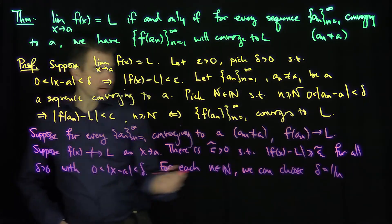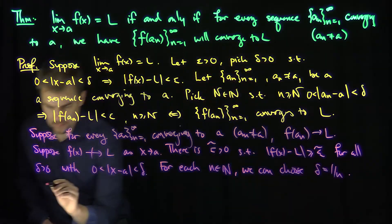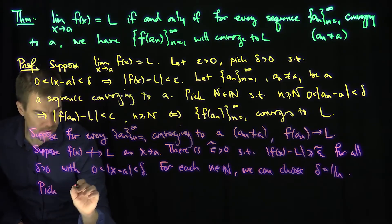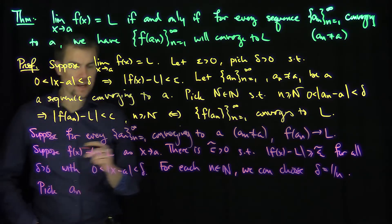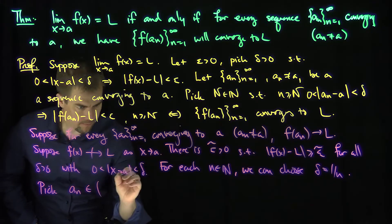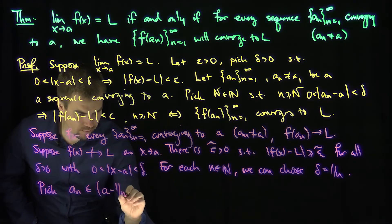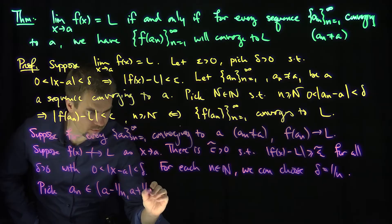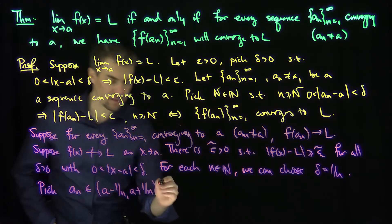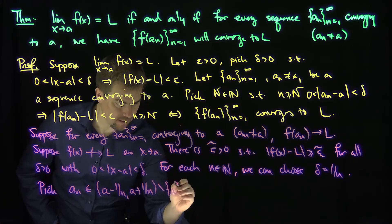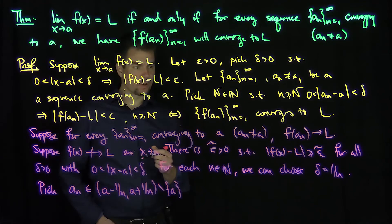and then I can find, we can pick a number aₙ in what interval? In the interval from a - 1/n to a + 1/n, that's not equal to a itself. And this sequence will converge to a.